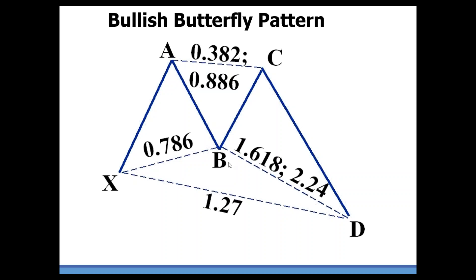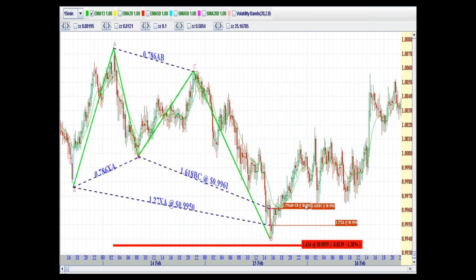This sets up the other measurements like the BC extension of a 1.618 or as much as a 2.24, all complementing this 1.27 extension.